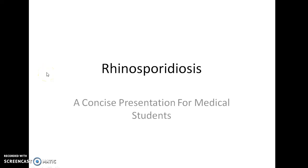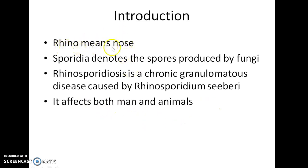Hello guys, this is Indian Medico and in this video we are going to see about Rhinosporidiosis. This is a concise presentation for medical students. Rhino means nose and sporidia denotes the spores produced by fungi. Rhinosporidiosis is a chronic granulomatous disease caused by Rhinosporidium seeberi. It affects both man and animals.